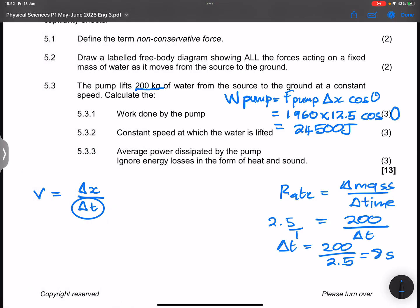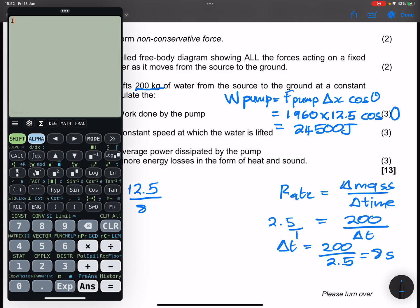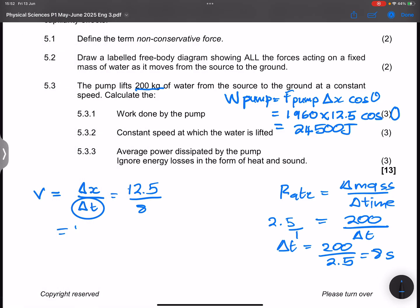So that means the change in distance, that's 12.5 meters divided by that time, which is eight seconds. And so the speed there would be 12.5 divided by eight. And we'll just say that's 1.56 meters per second.